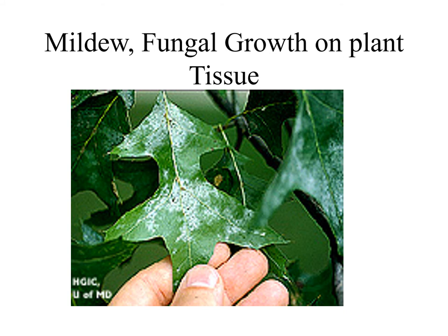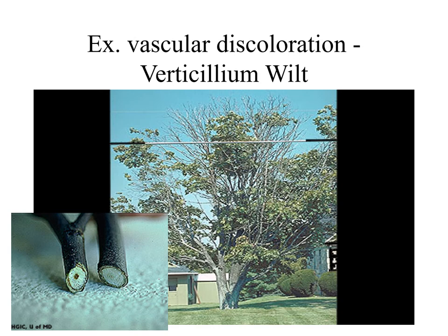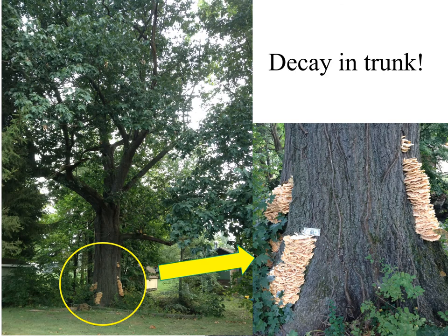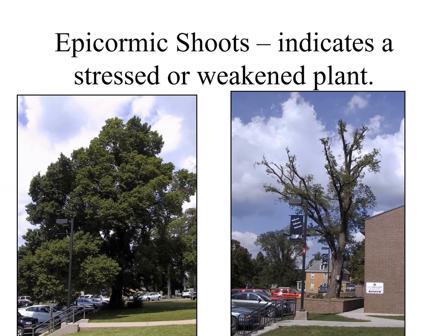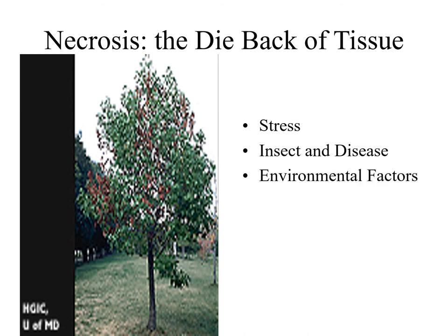When you see white to gray-white fungi on your leaves and shoots, this could be powdery mildew. A canker is a localized area of stem where the bark is sunken or missing; it may be caused by a wound or disease. If you cut a twig sample and see dark discolored streaks in the young xylem, this is most likely verticillium wilt, which is a vascular disease. Mushrooms or fruiting bodies indicate decay. Epicormic shoots indicate stress or a weakened plant — in this case, abiotic factors of construction and over-pruning stress the tree. Necrosis is the dieback of tissue and can be caused by stress, insects and disease, and environmental factors.